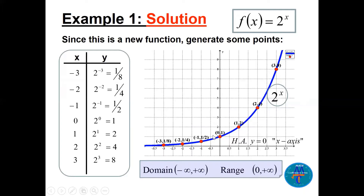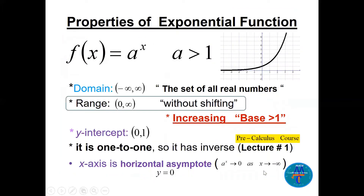The graph is increasing because the base is greater than one. The x-axis, where y = 0, is the horizontal asymptote — the graph goes down but never touches the x-axis. The domain is all real numbers and the range is (0, ∞). For any base greater than one the graph looks like this.